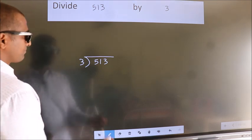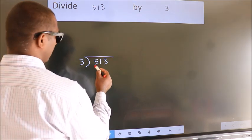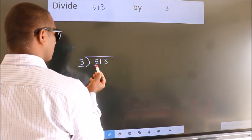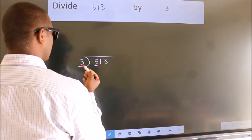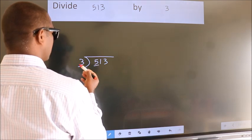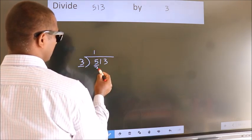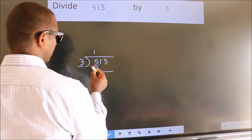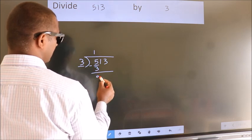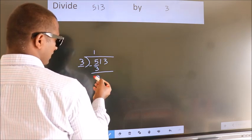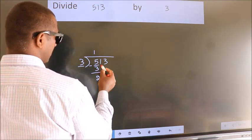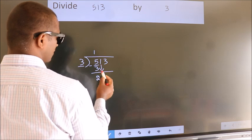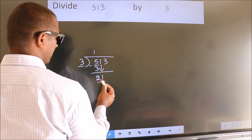Next. Here we have 5, here 3. A number close to 5 in the 3 times table is 3 ones 3. Now we should subtract. We get 2. After this, bring down the beside number. So 1 down, so 21.